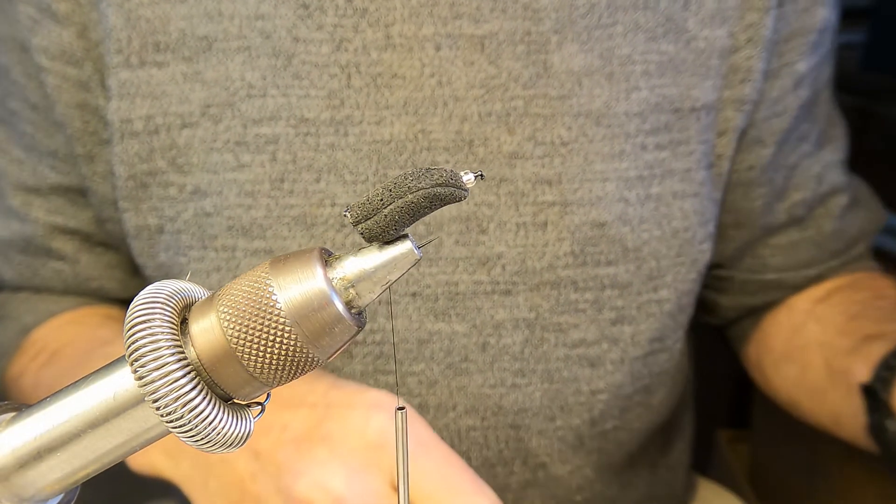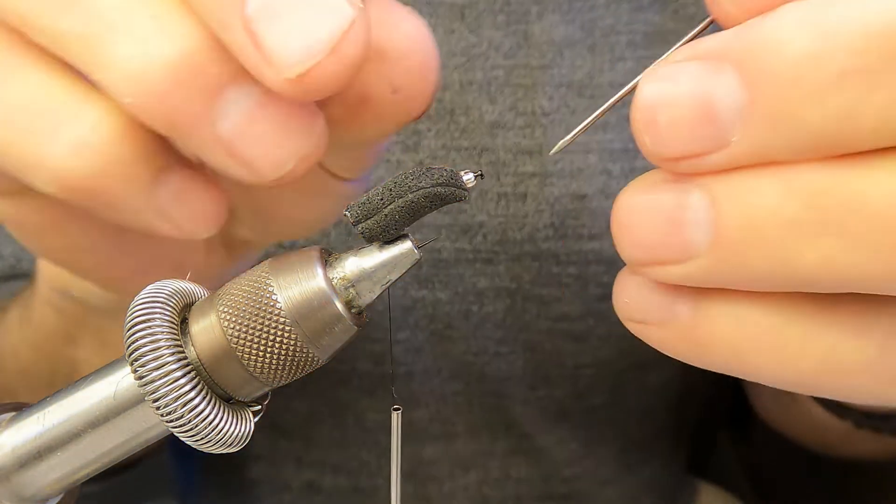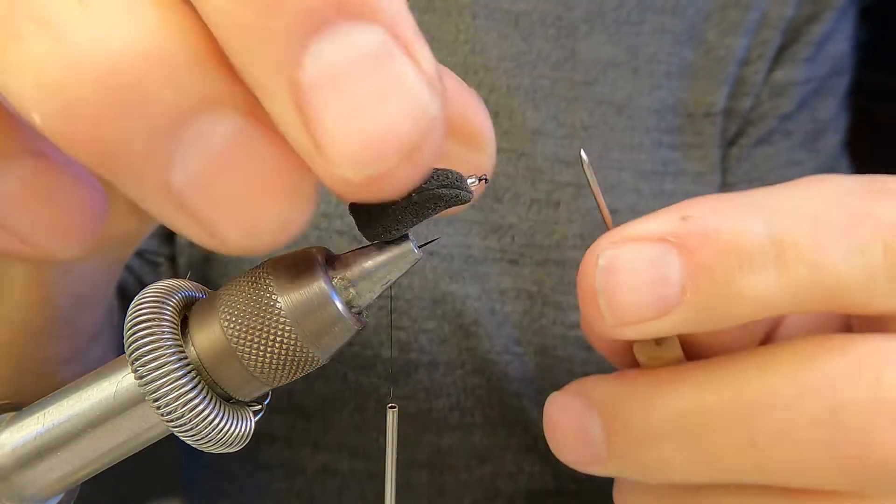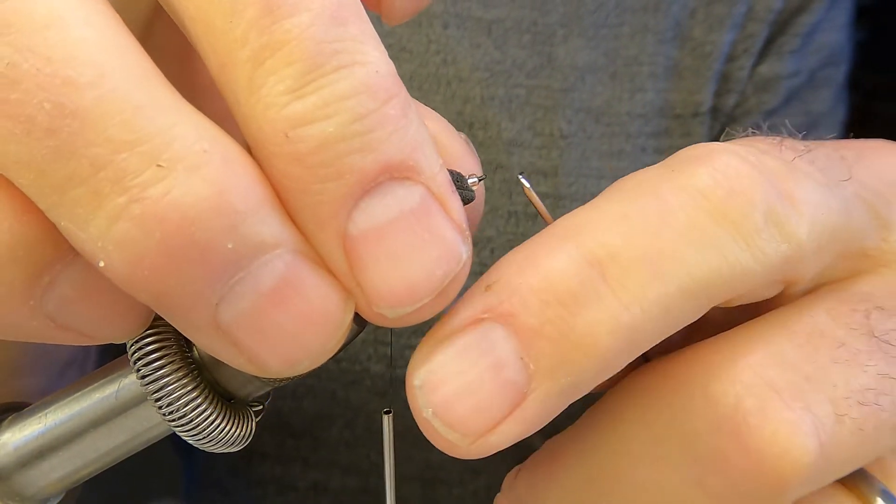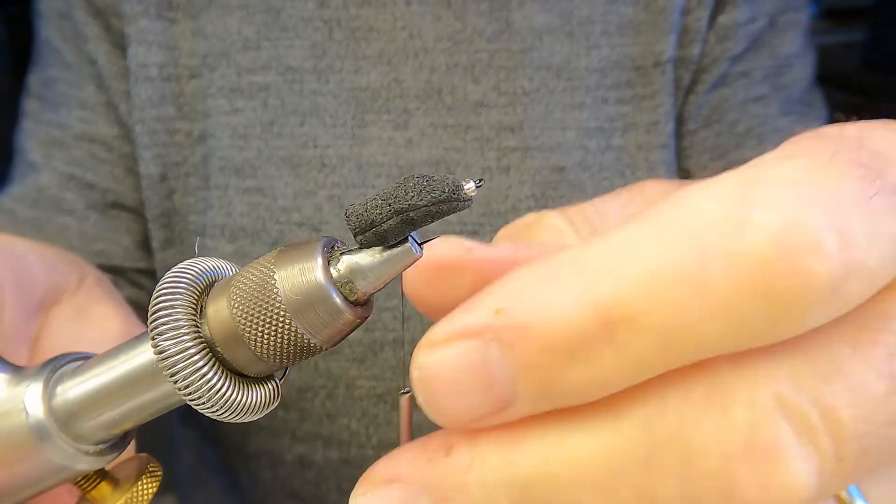Then we've got to clear the hook eye with my bodkin because of course you just slid a bunch of super glue over this.